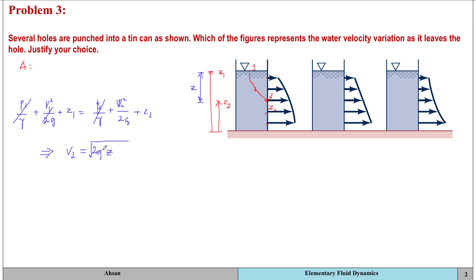If you recognize that V2 = √(2gz) is the equation of a parabola, you can immediately identify the correct figure — one of the options shows a straight line and another curves inward, so neither can be a parabola. The third option is the only viable choice. Alternatively, you can plug in values for z at different heights, compute the velocities, and observe the trend as you go further down. Either way, the parabolic profile is the correct answer.